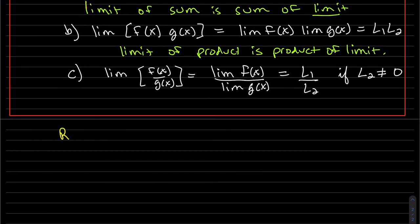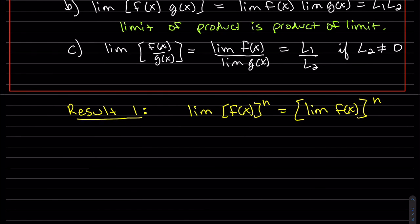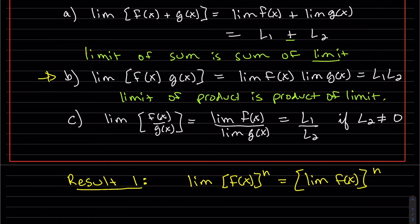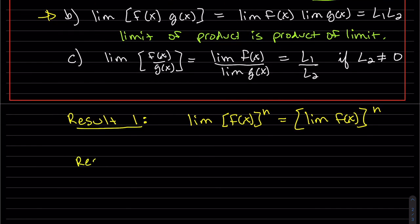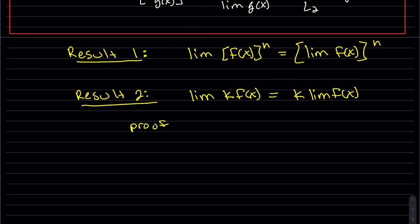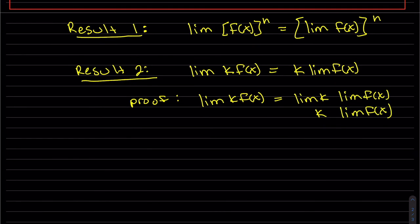This produces a couple of results. Our first result is that the limit of a power is the power of the limit, because of repeated multiplication — that comes straight from property B. Our second result is that the limit of a constant times f of x is equal to the constant times the limit. This is because limit of k is k from above, so we can always factor a constant out of the limit. Sometimes helpful.